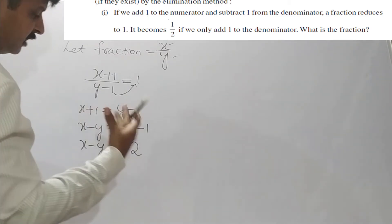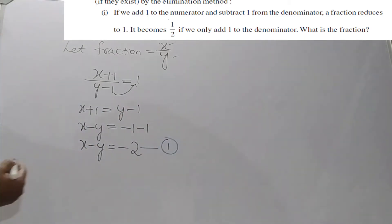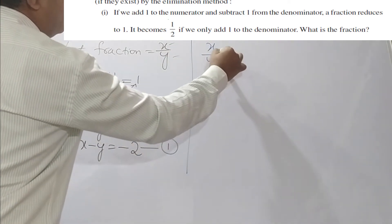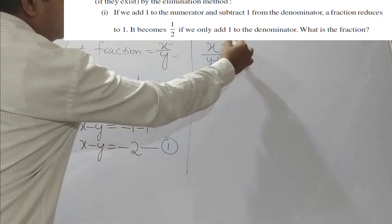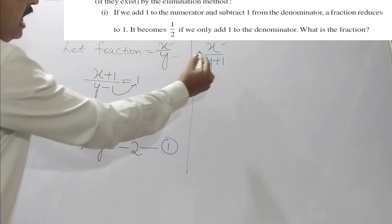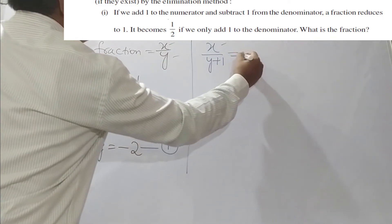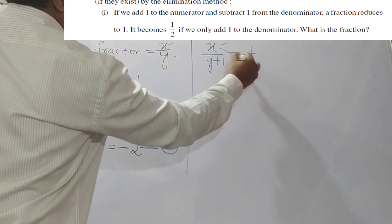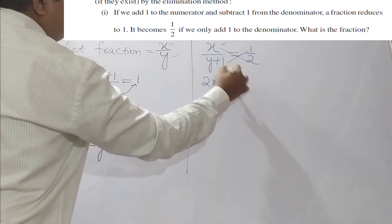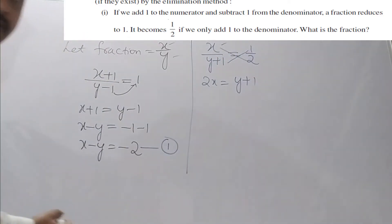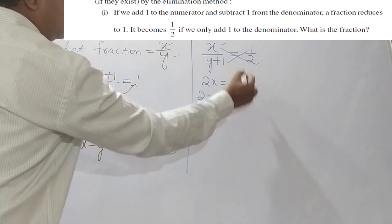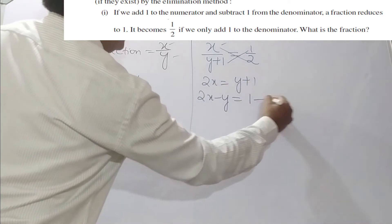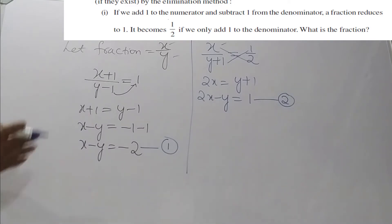Second condition: x/(y+1) = 1/2. Cross-multiplying: 2x = y + 1, so 2x - y = 1 (second equation). Now we have two equations: x - y = -2 and 2x - y = 1, which we will solve using the elimination method.